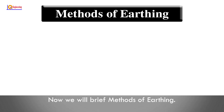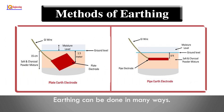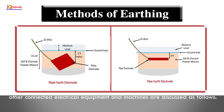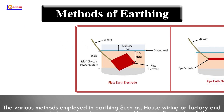Now we will briefly cover the methods of earthing. Earthing can be done in many ways. The various methods employed in earthing, such as for house wiring, factories, and other connected electrical equipment and machines, are discussed as follows.